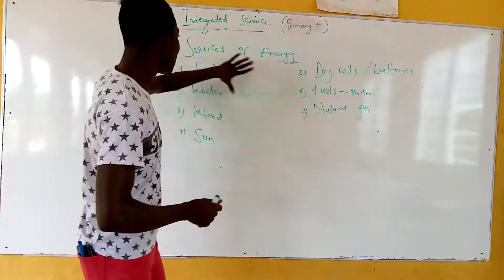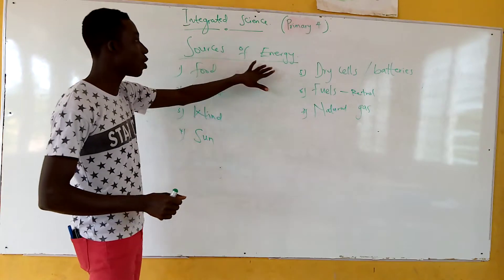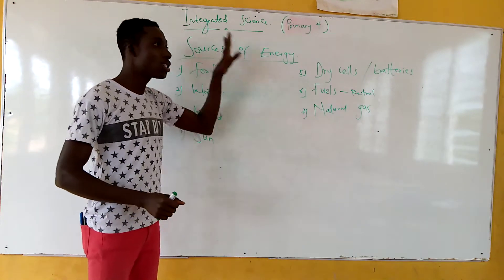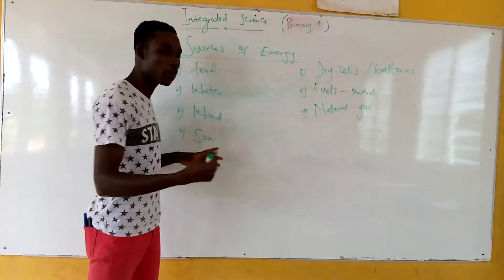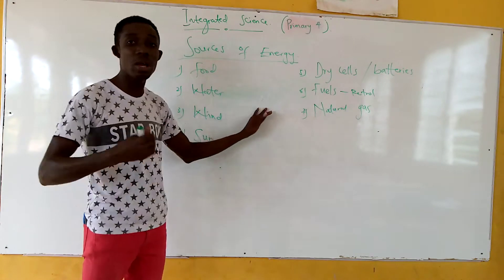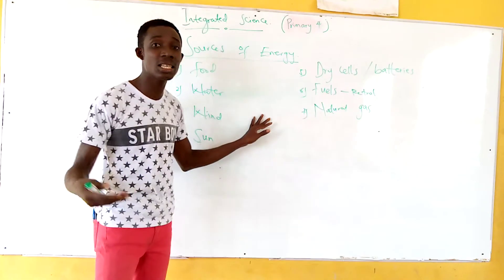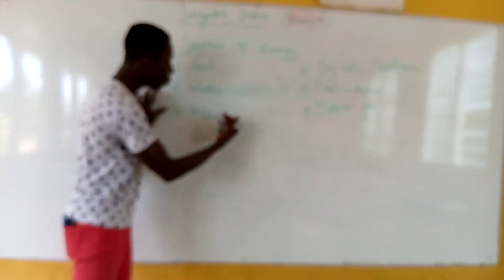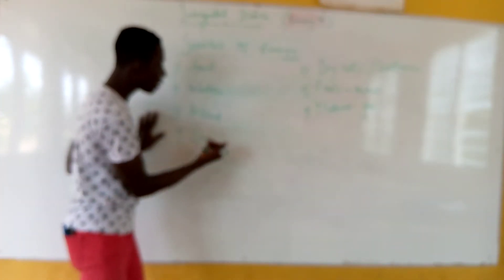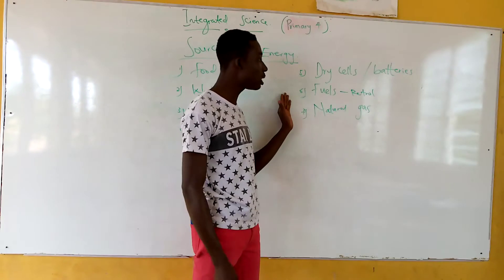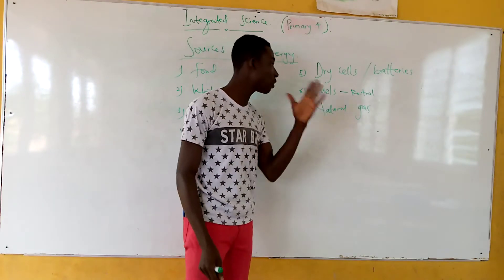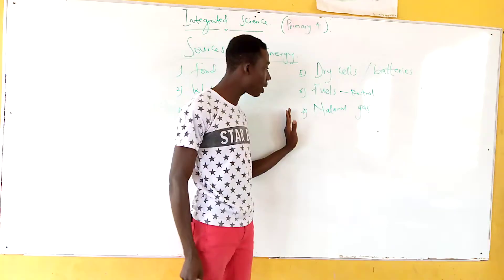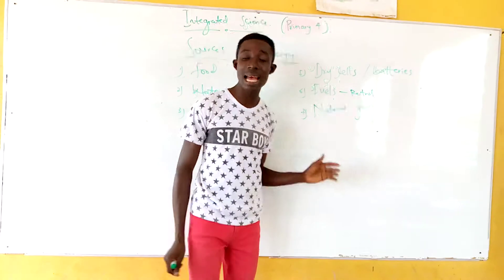So these are the various sources of energy — where we get energy from. We get energy from food, from water, from wind, from the sun, from dry cells and batteries, from fuels such as petrol, diesel, and kerosene, and the seventh one — from natural gas.